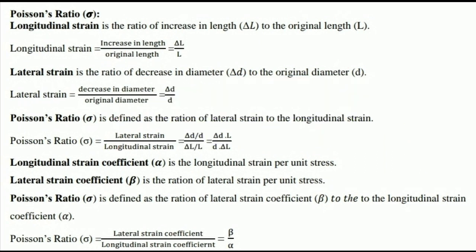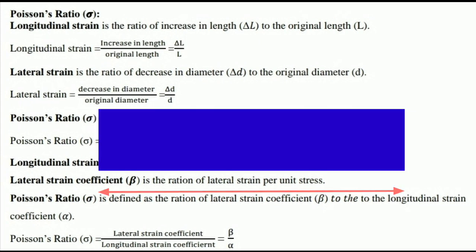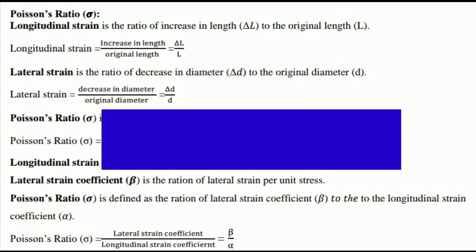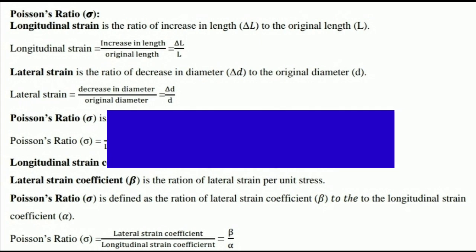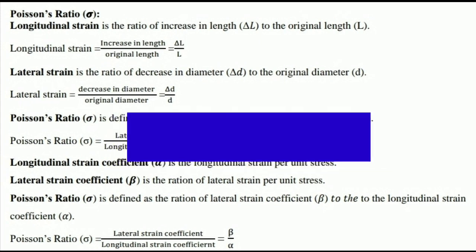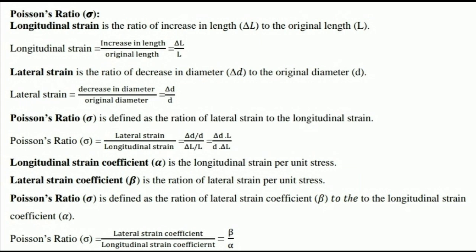Lateral strain is the ratio of decrease in diameter to the original diameter — that is, Δd divided by d. If we have a body of original length L and apply a force to one end, the length of the body changes and, at the same time, the diameter of the body also changes. The observed decrease in diameter is what we call lateral strain.